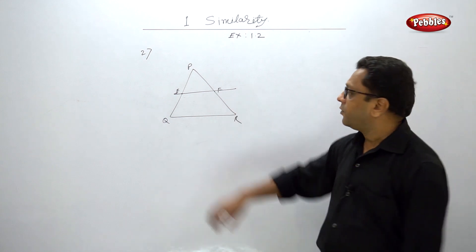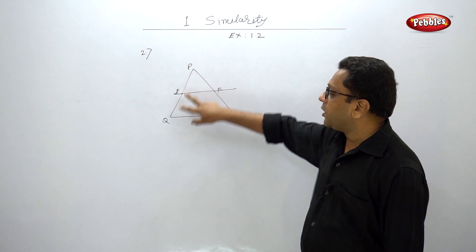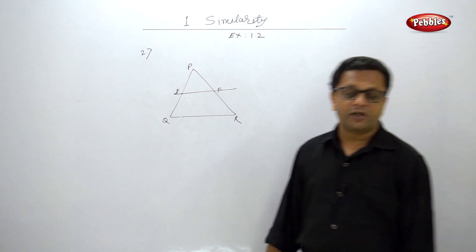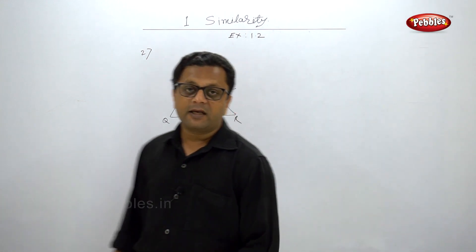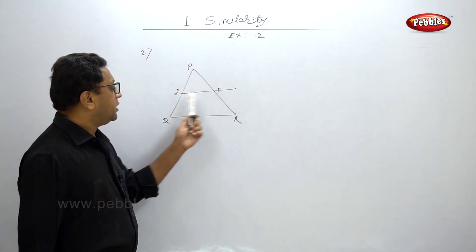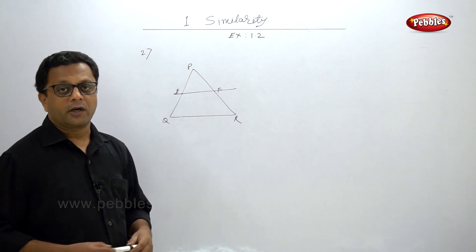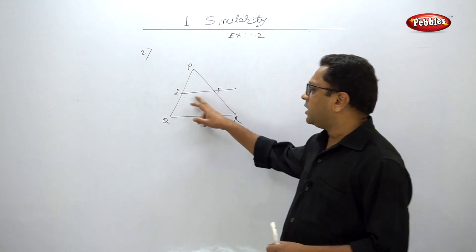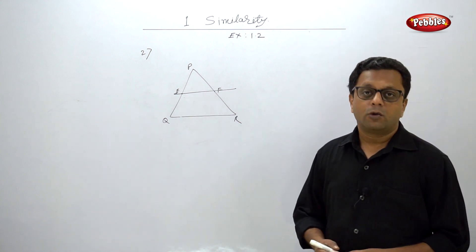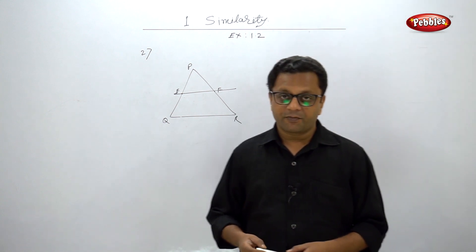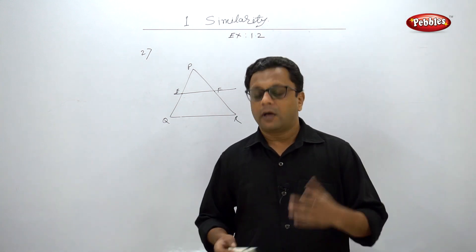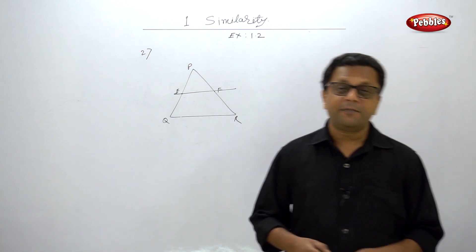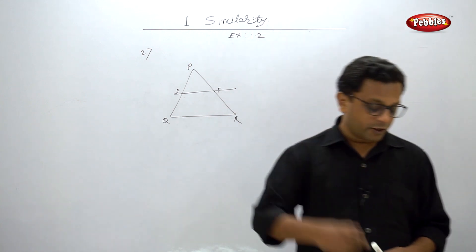If the ratio PE/EQ equals PF/FR, state that EF is parallel to QR. If the ratio is not equal, state that EF is not parallel to QR by the converse of BPT. Please pause your video and solve this example — do all the calculations very properly; it's just division and multiplication.